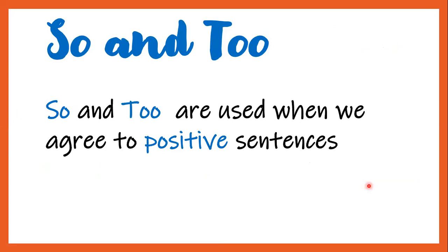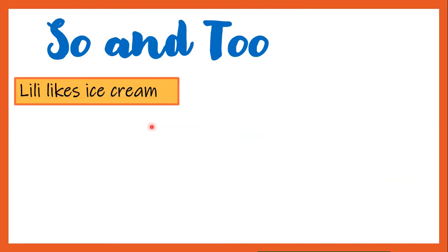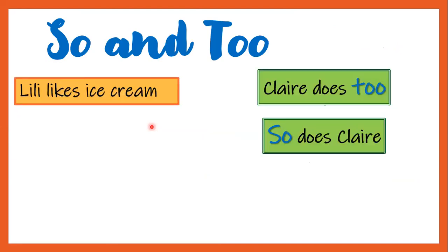We are going to start talking about so and too. Remember, so and too we use with positive sentences, and the difference between them is just the word order. For example: 'Lily likes ice cream — Claire does too / So does Claire.' If you notice, we write too at the end of the sentence, and so we write at the beginning of the sentence.